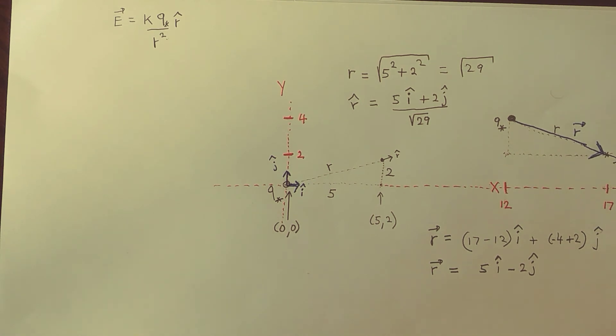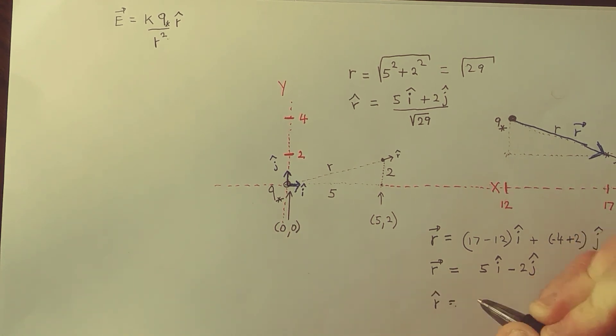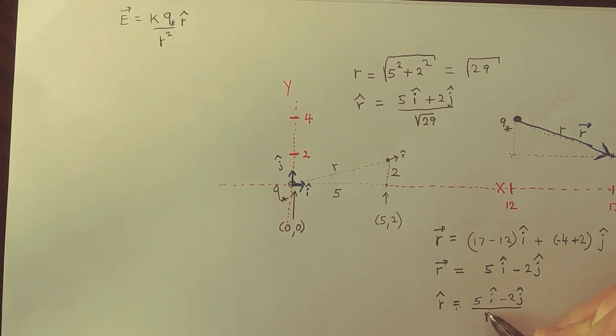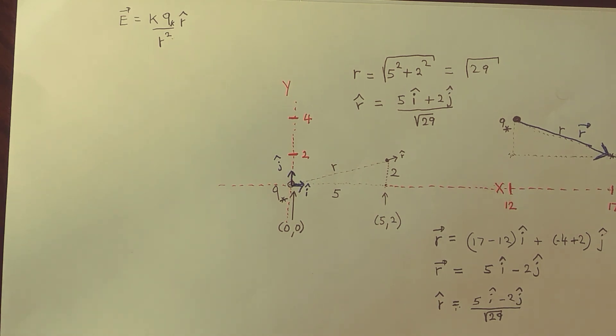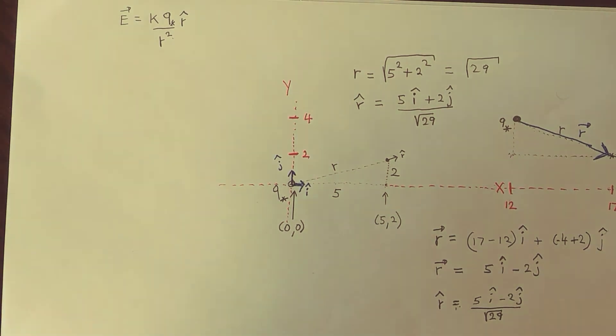So that has a length which is the square root of 29. So what we want now is a unit vector which has 5 i minus 2 j hat divided by the square root of 29. And so what we're going to do next is continue constructing unit vectors, but we're going to be a little more general in our notation.